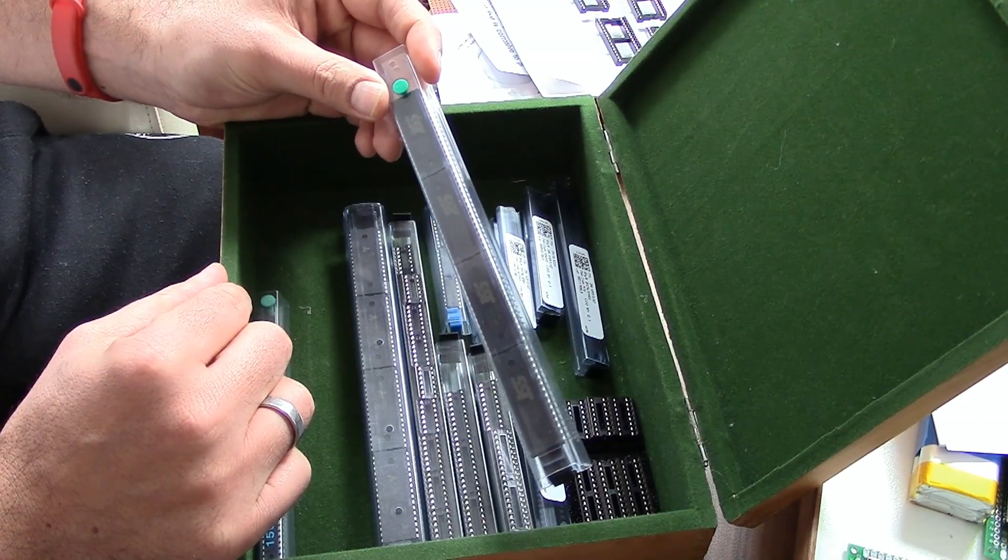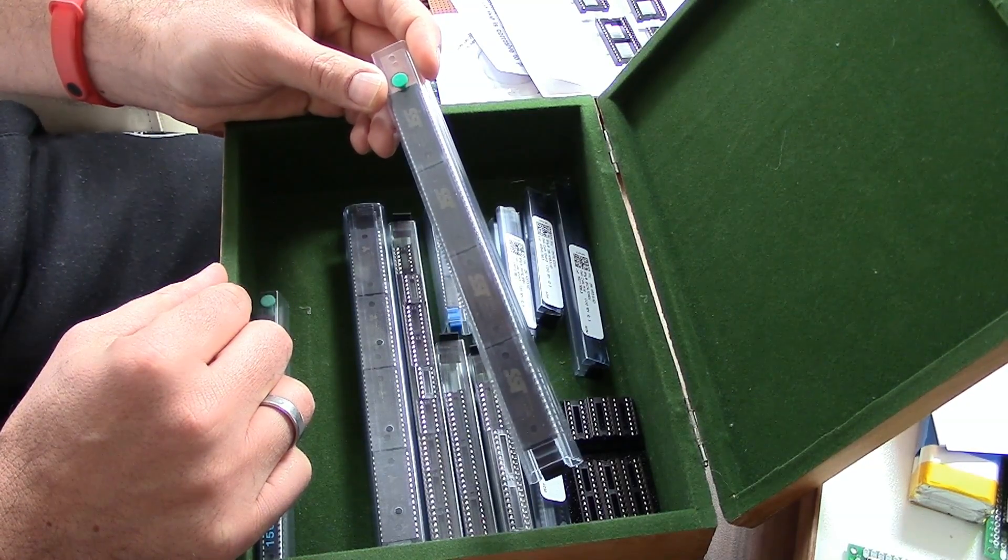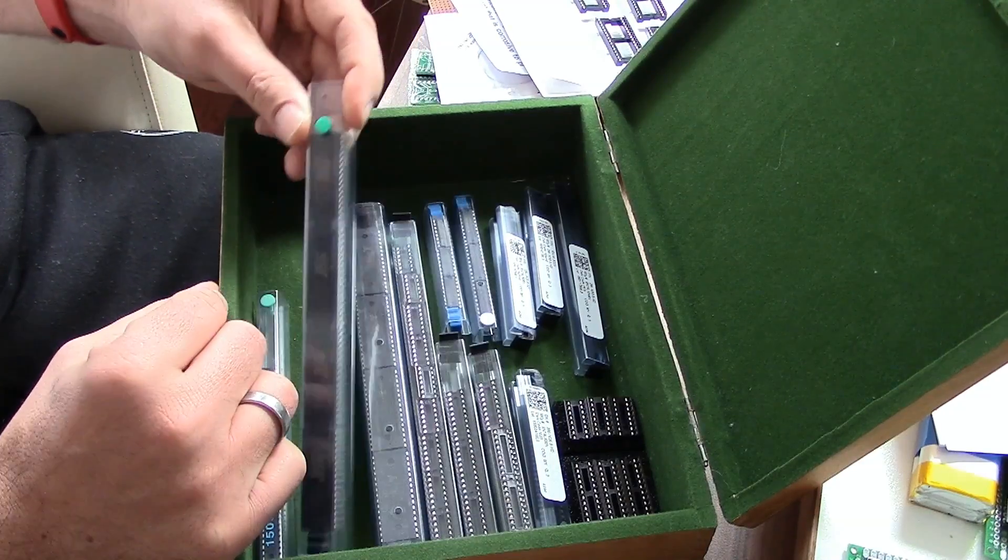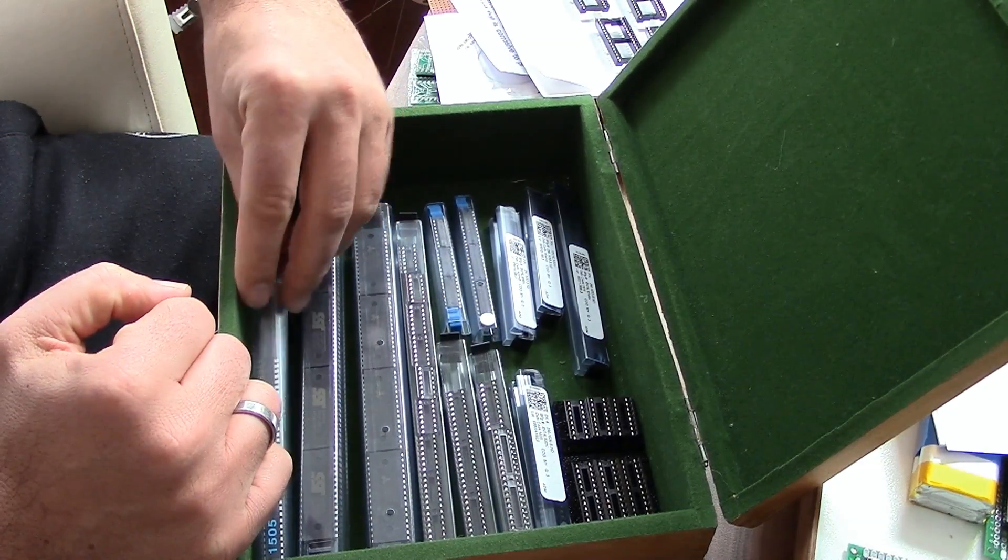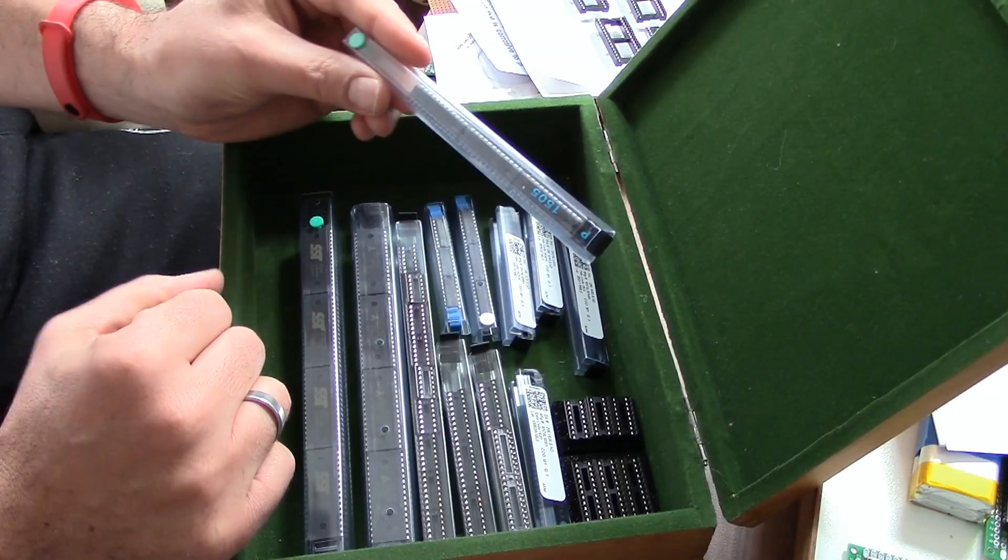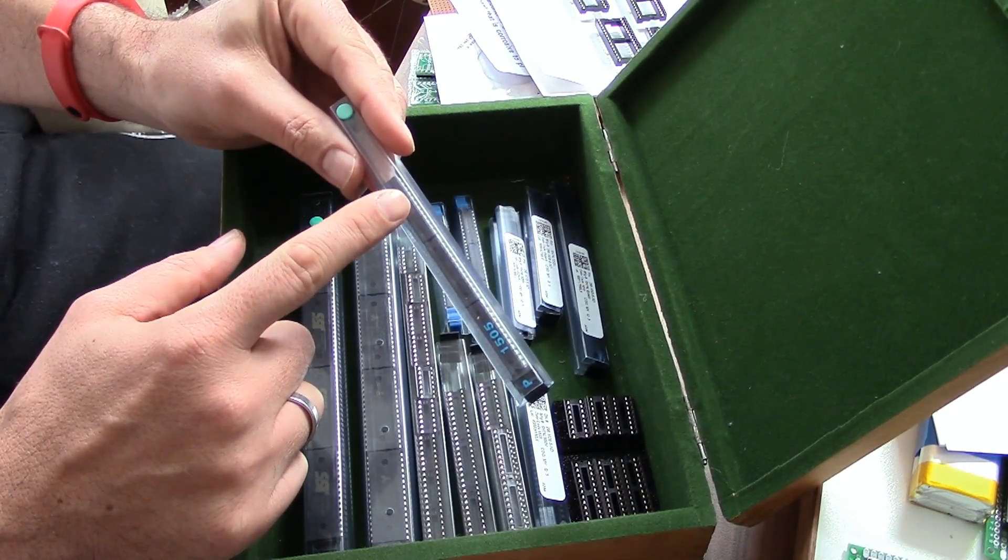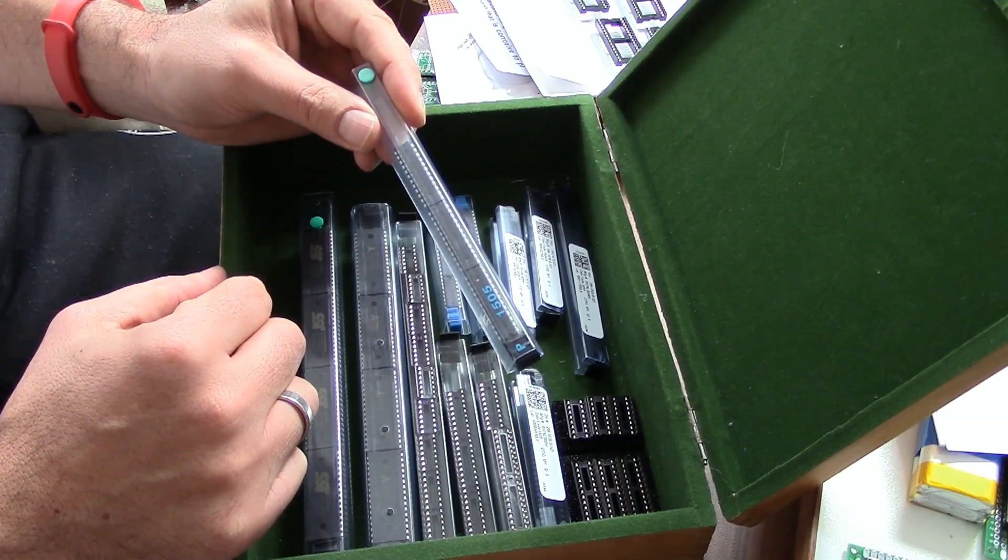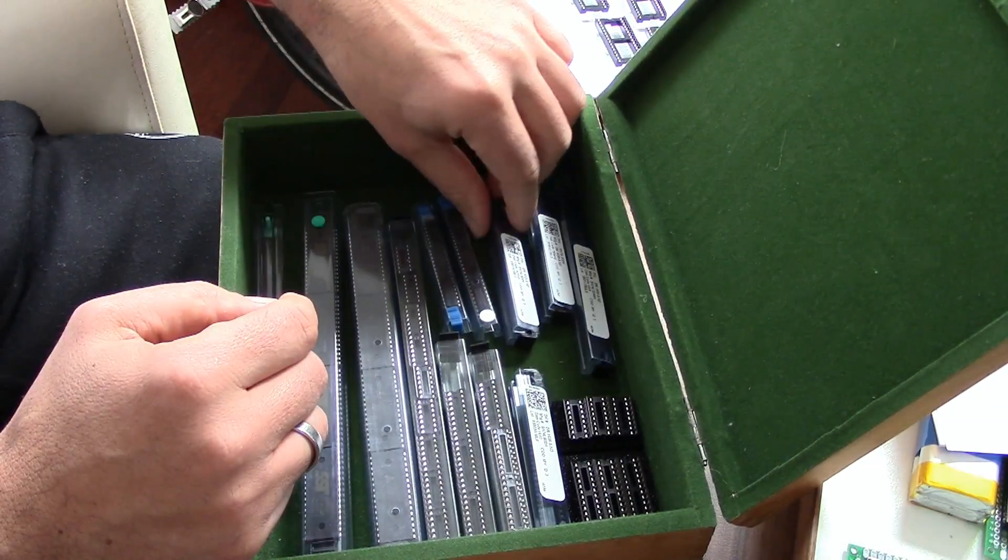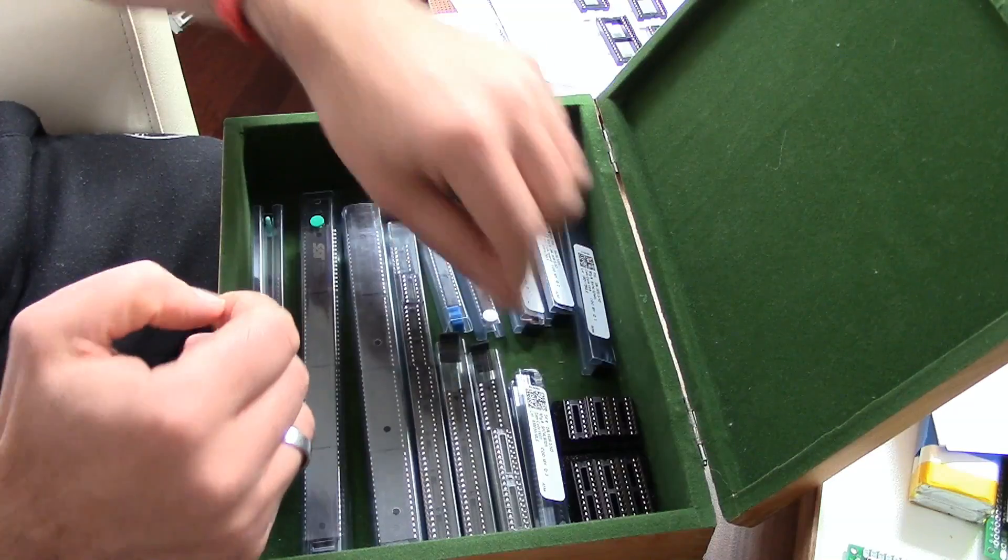And so here is the flash, 4 megabit as well, four of them. And finally we have these magic GAL chips - programmable logic - so you can write your own logic to these instead of using the ORs and NANDs and so on.